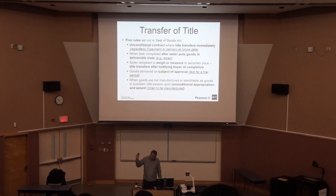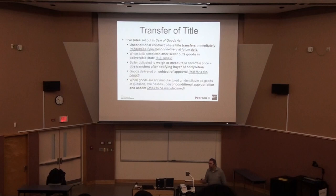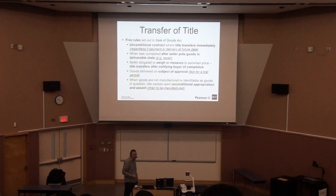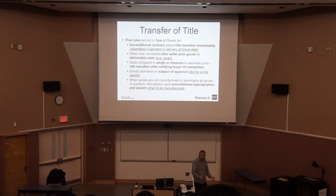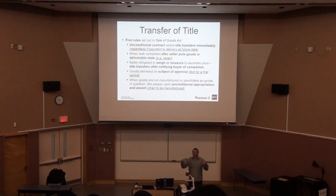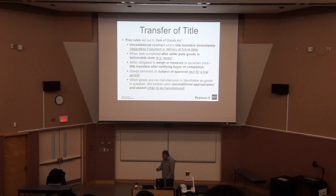The fourth rule is when goods are subject to approval — trying the goods. For example, I went to a store and my daughter wanted to buy a Fitbit watch. The salesperson said to take it, use it, and in 14 days you can return it. Title only passed after the 14 days. Some companies do this with furniture — you can have the sofa or mattress at home for a while, and then once you acknowledge you're happy with it, you confirm the purchase.